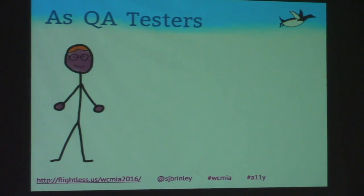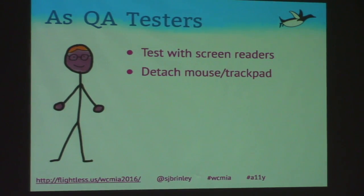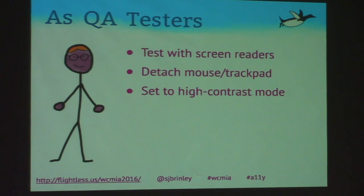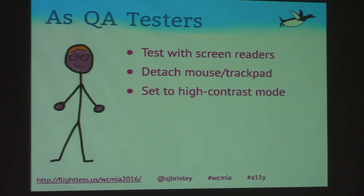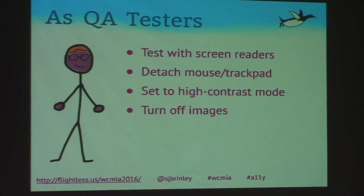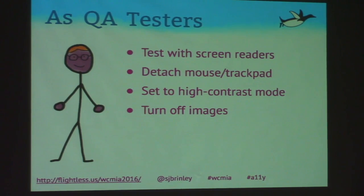For QA testers: test with screen readers; detach the mouse and trackpad to see if the site works with just the keyboard; set the browser to high contrast mode — if you don't have good contrast ratio, certain elements will completely disappear; and turn off images to see if all necessary content is available as text. For example, if you turn off images and the menu just says 'View our menu' and then nothing appears, you know the menu was only an image.